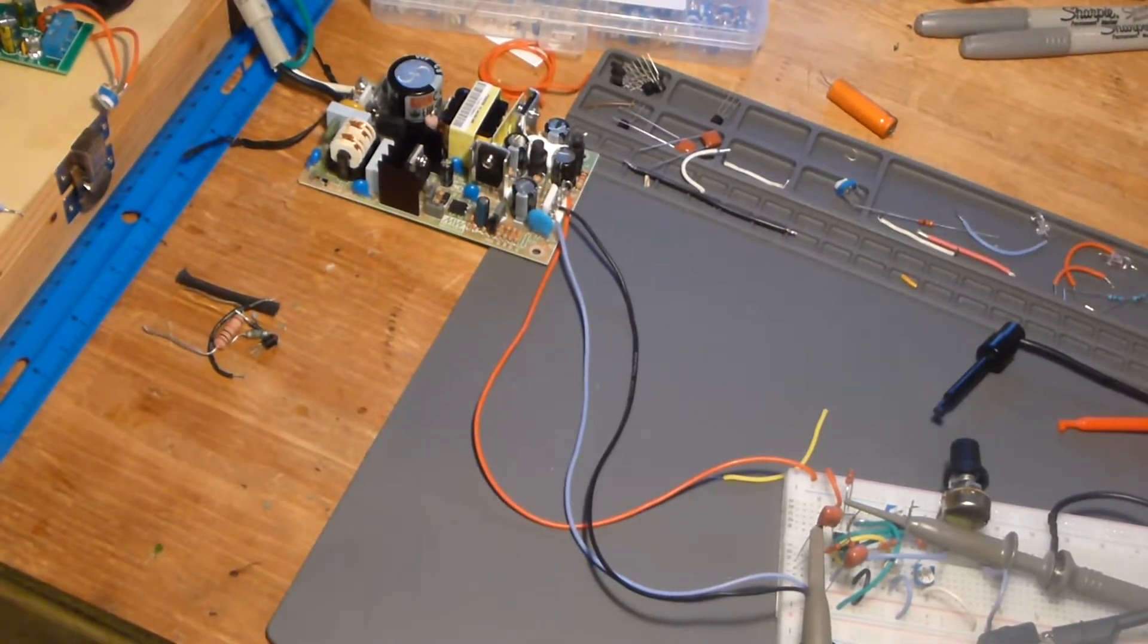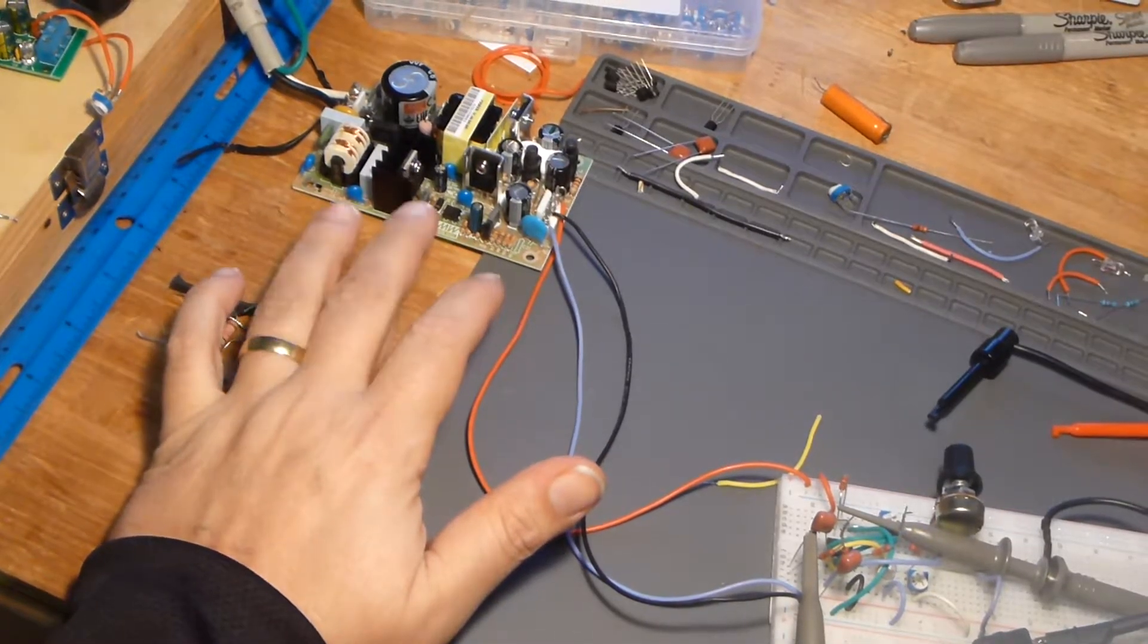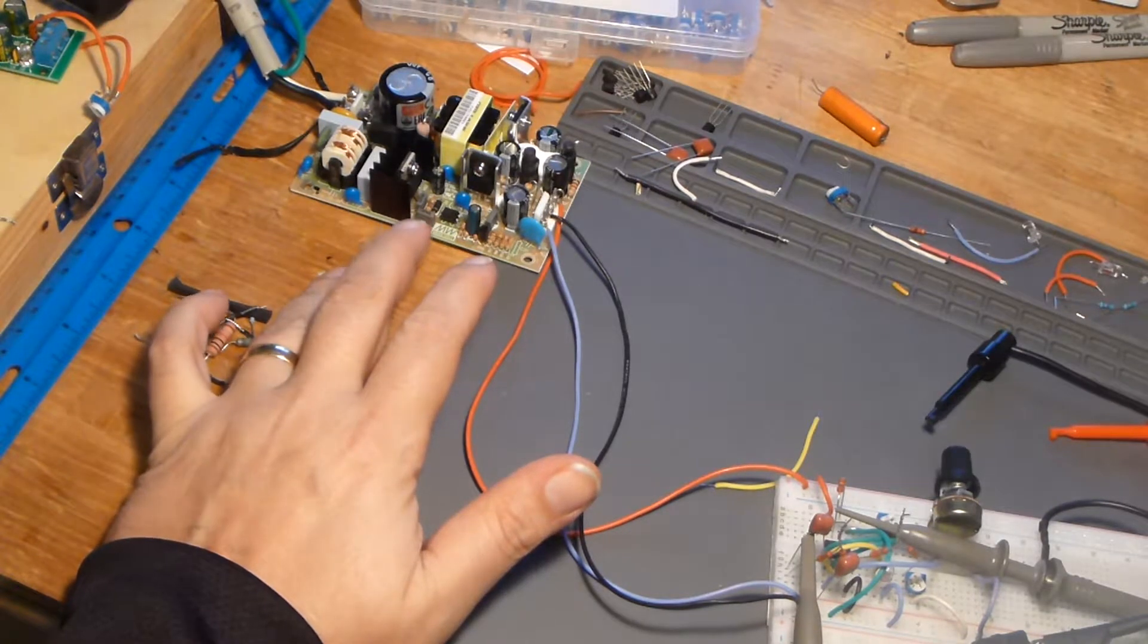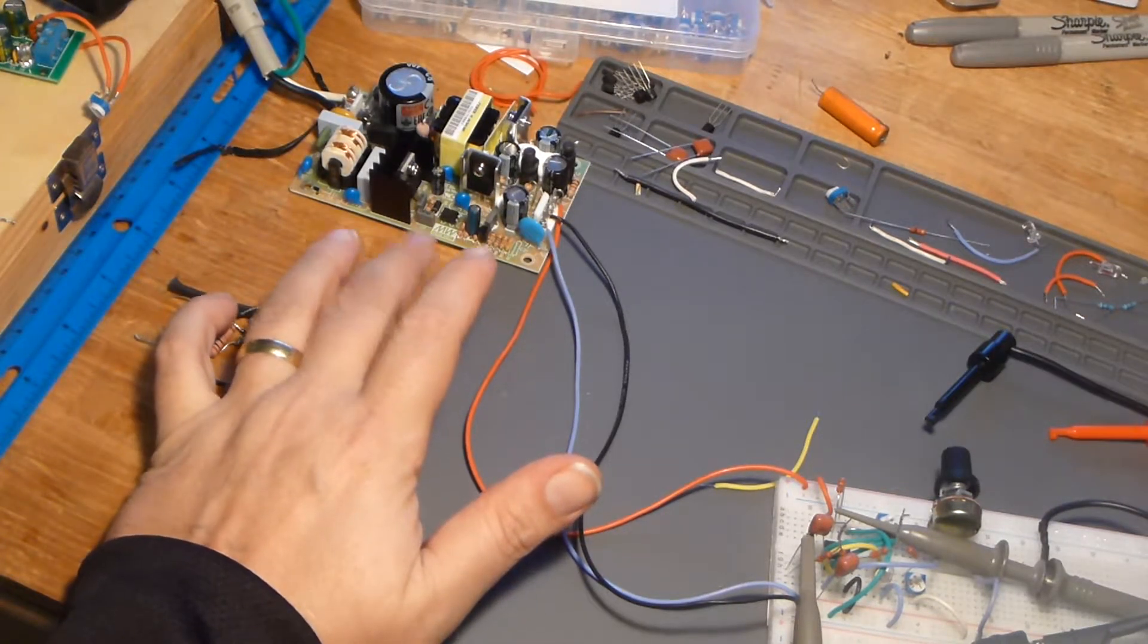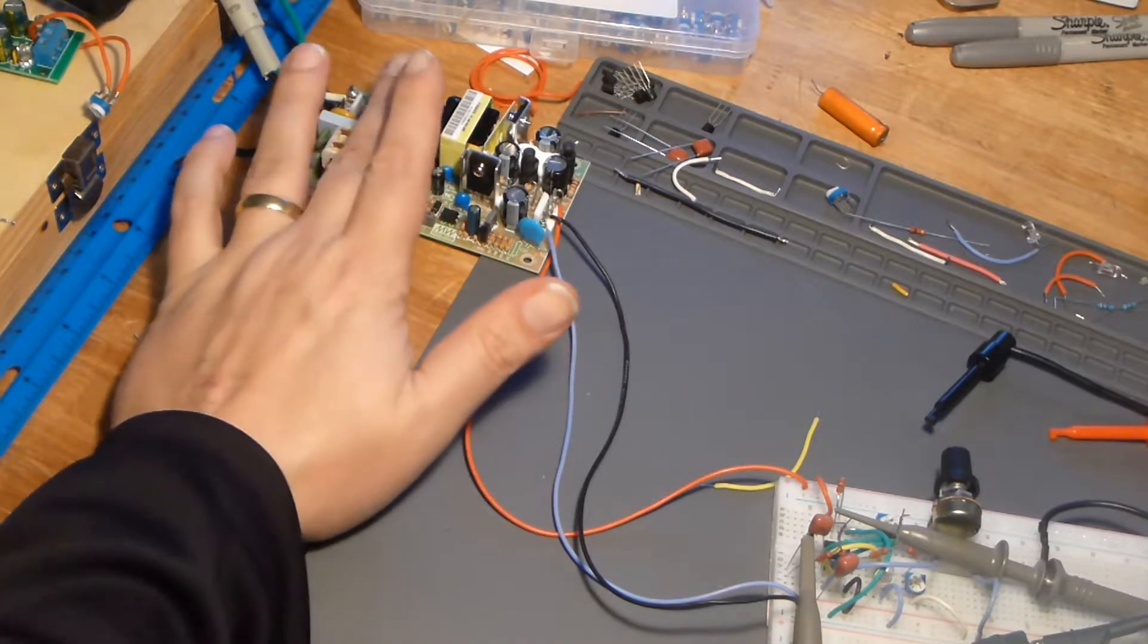The power supply is a Mean Well dual output regulated power supply, 15 volts positive, 15 volts negative. It's actually a pretty well-built little board. It's been running all night, well, for a few hours anyway.